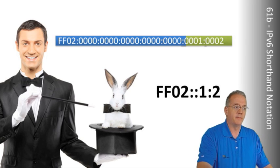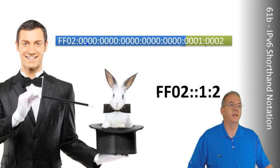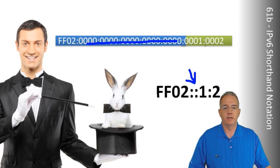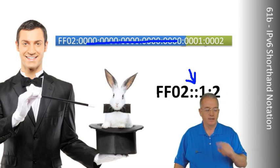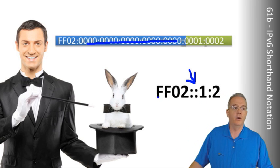So what I'm going to do is just consolidate all of these zeros into a double colon. That just means a whole bunch of zeros. You can't use double colons in multiple spots, though. It's only one spot because it has to figure out where it goes.